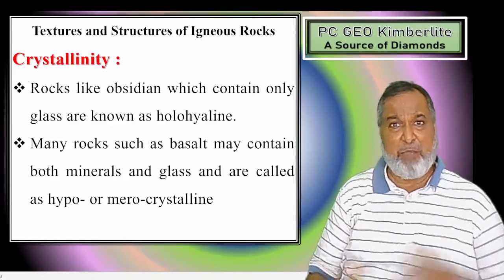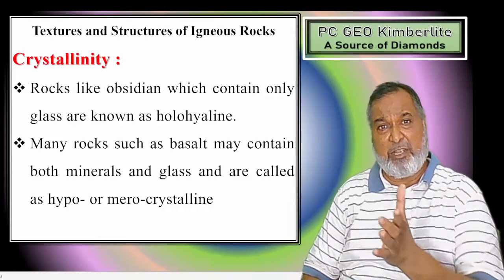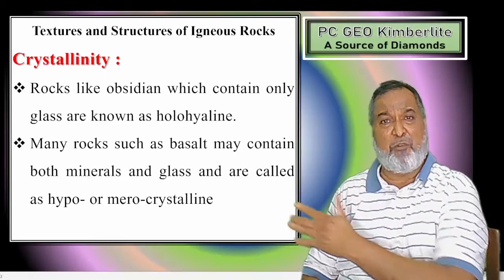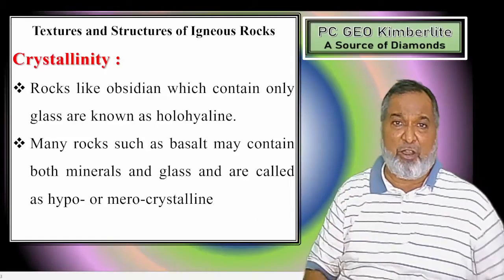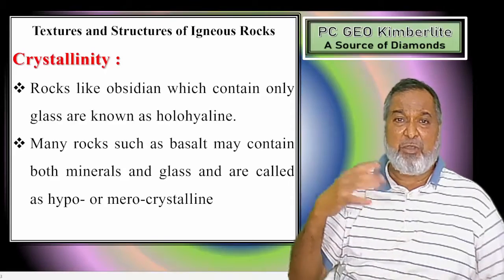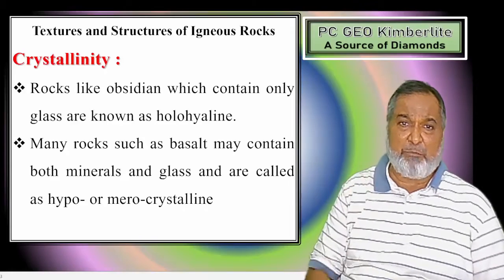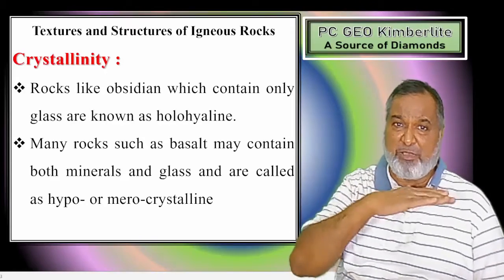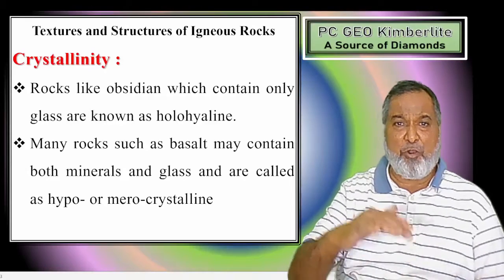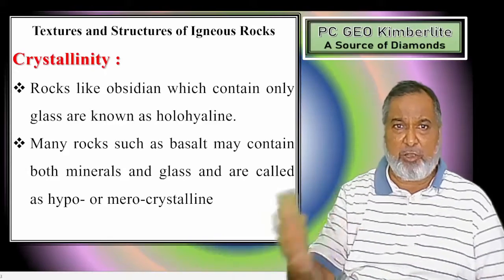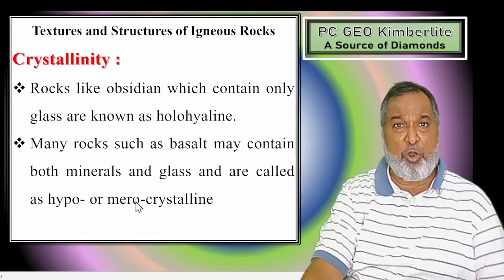In between these two extremes, there may be variations of percentage - whether crystals are 80%, 70%, 60%, 50%, 40%, with the corresponding proportion being glass. If there is an admixture of crystals as well as glass in a rock, then these types of rocks are called Hypocrystalline or Merocrystalline, or Hypohyaline or Merohyaline. Either term can be used - Hypo/Mero-crystalline or Hypo/Mero-hyaline.